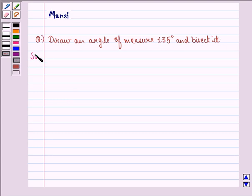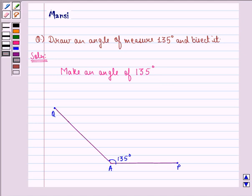Let us see the solution to this question. First thing that we do is make an angle of 135 degrees. Now, we can make an angle of 135 degrees with the help of a protractor or with the help of ruler and compasses as we have seen in question number 5. So, this is an angle of 135 degrees.